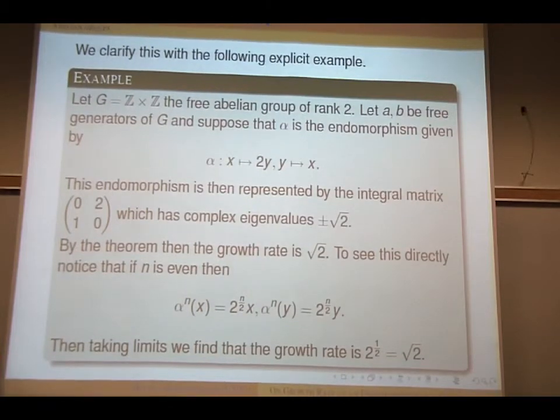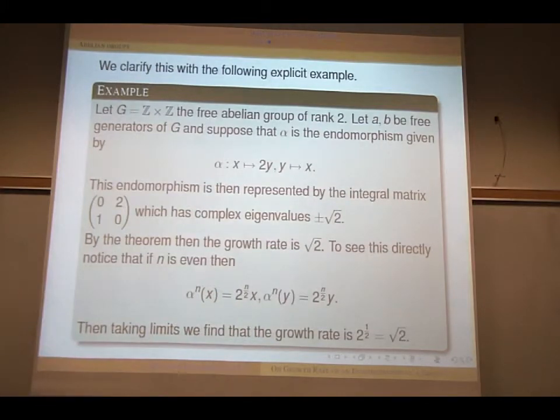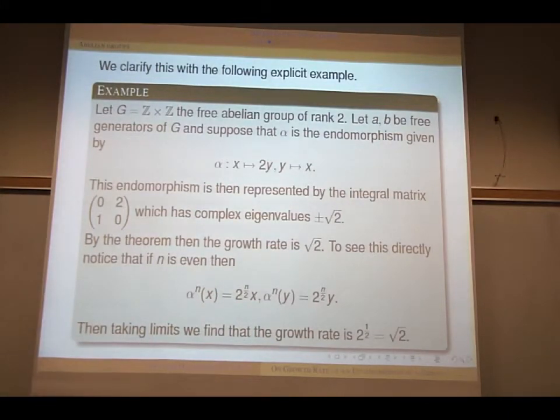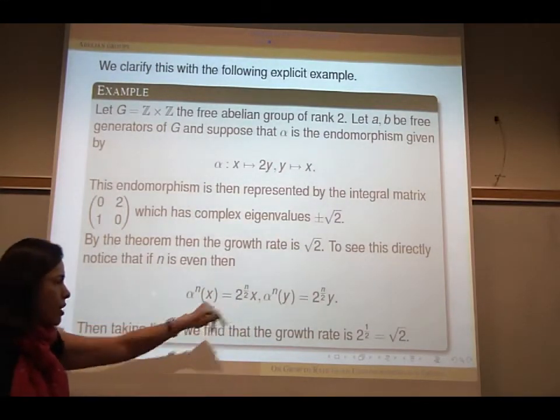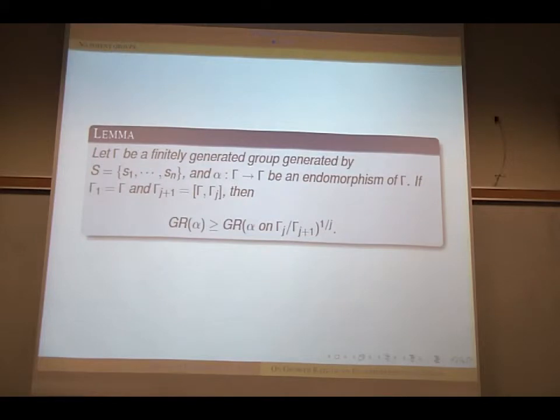You can also directly compute this growth rate. So alpha^n(x) is 2 to power n/2 times x and alpha^n(y) is 2 to power n/2 times y. And you take the limit and take the square root and so on. So again, you arrive at the same answer square root of 2. So this is a very simple example that you can see.